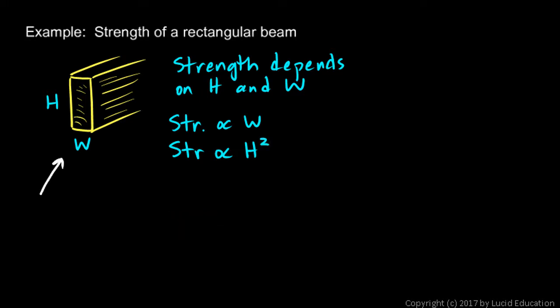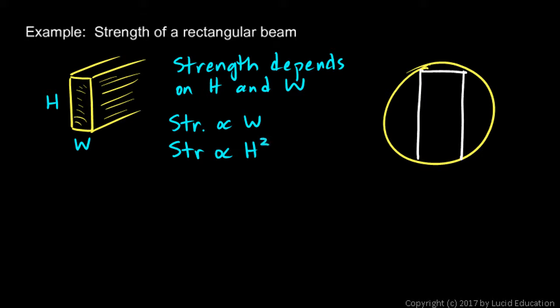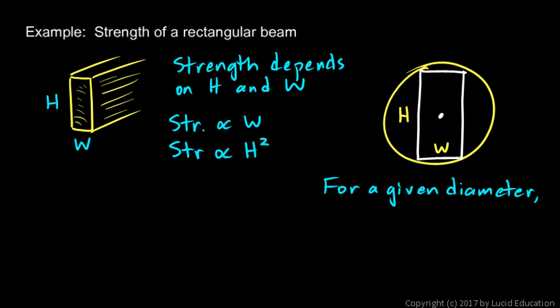Tall beams are significantly stronger when oriented vertically. This is relevant when you need to cut a beam from a log. Here's a log and you're going to cut a beam out of it — the beam will have a certain height and a certain width, but you're constrained by the log. You can't make the beam any bigger than the log itself. So for a given diameter log — which is what you might know — you would want to find the values of H and W that would give maximum strength.